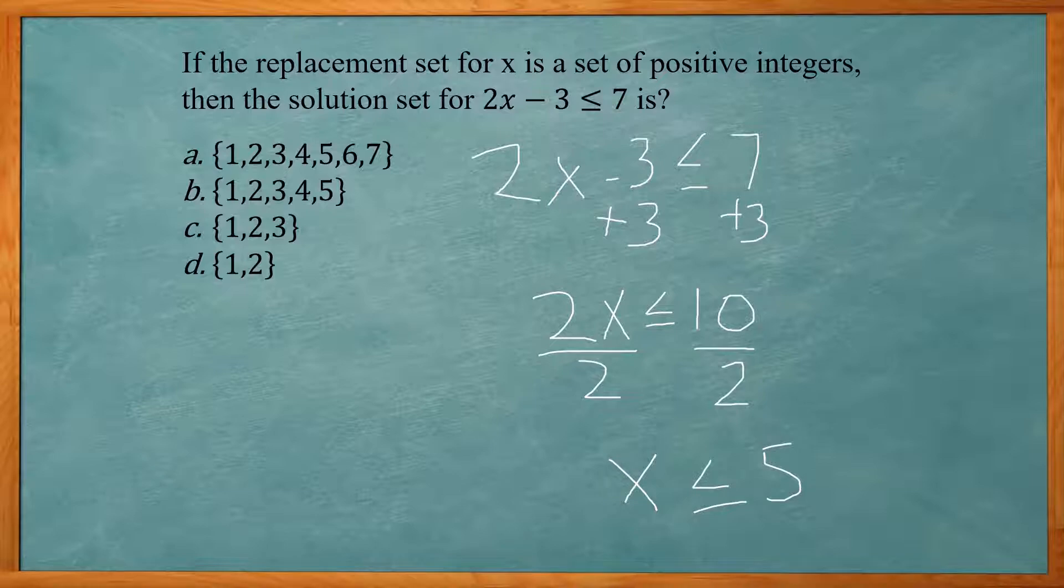Our answer is any number that's less than or equal to five. And it has to be a positive number. So I'm going to start with one. It's going to include two, three, four, and five. So we can't go to six because six is not less than or equal to five. So we're going to stop at five. So our answer choice B would be the correct answer.